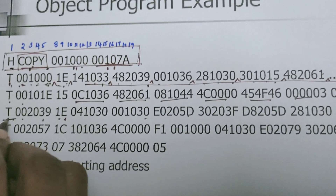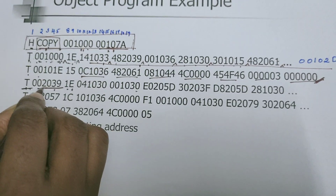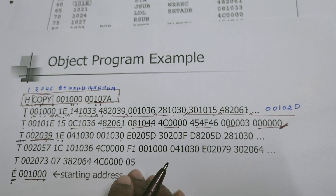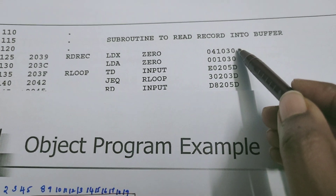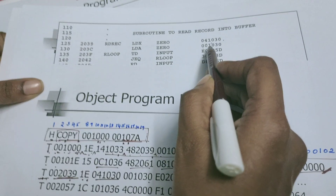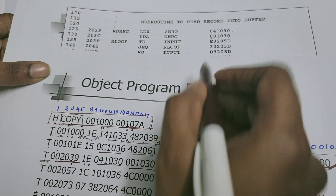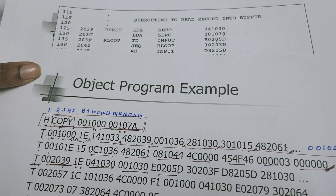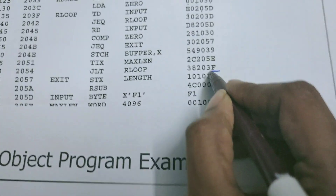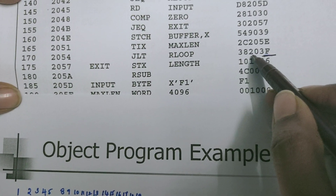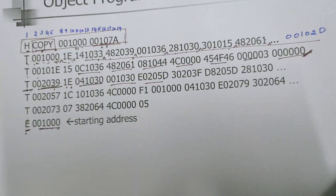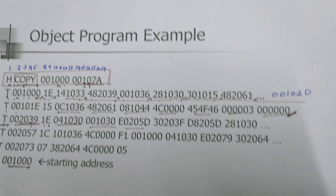The next text record has a starting address of 2039. We can see where 2039 appears in the program — it is the corresponding object code location. Since 30 bytes can be accommodated, 10 object codes can be stored — up to object code 38203F, the text record is created. Likewise, text records can be created till the end of the program.